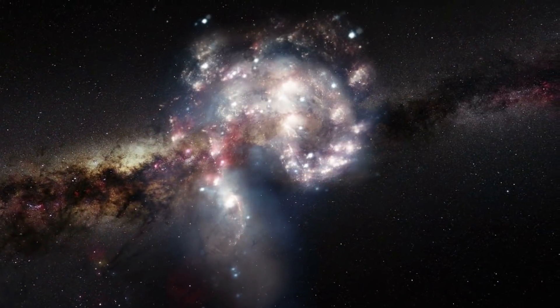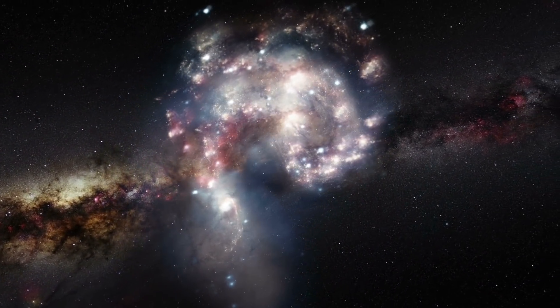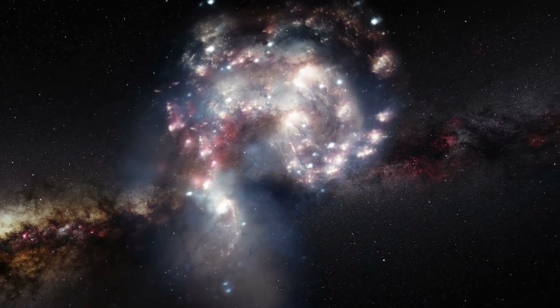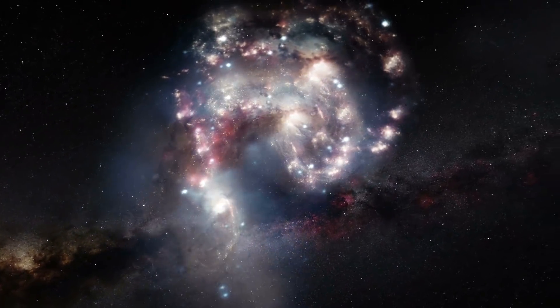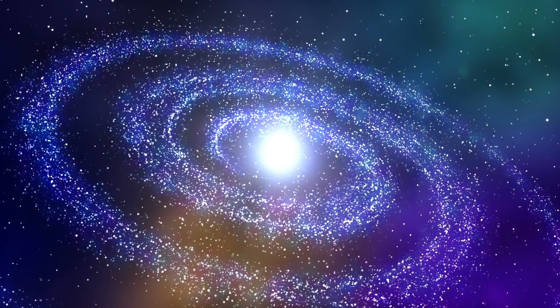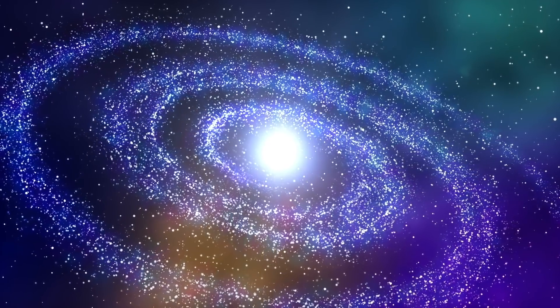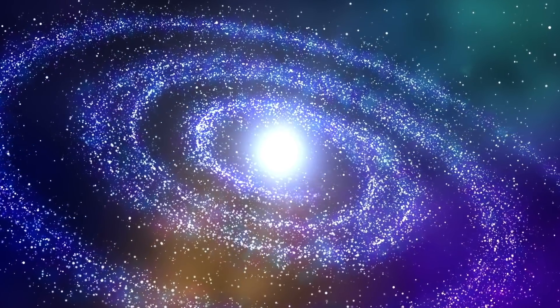Our galaxy, the Milky Way, is a large barred spiral galaxy. When we look up into the night sky, everything we see is inside the Milky Way. It got this name because it appears as a milky band of light in the night sky when you see it in really dark areas.